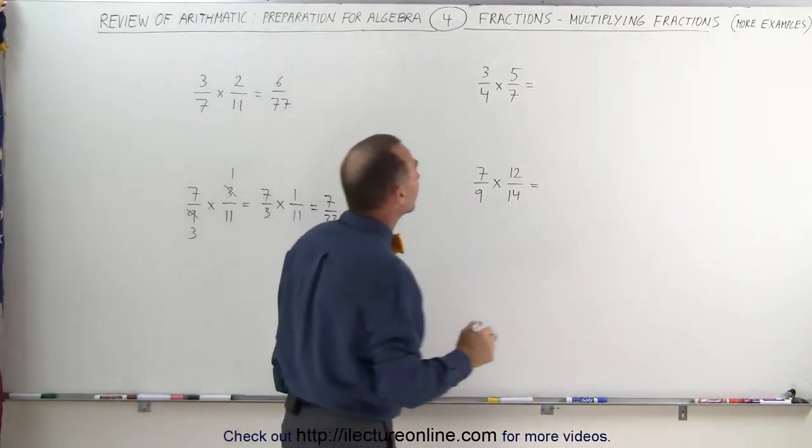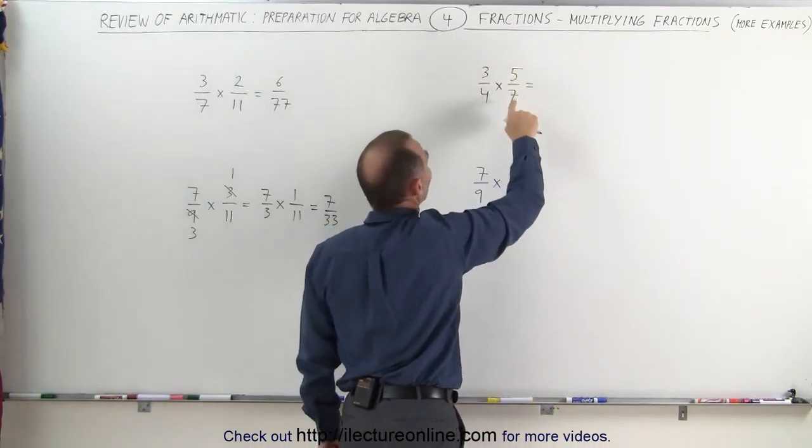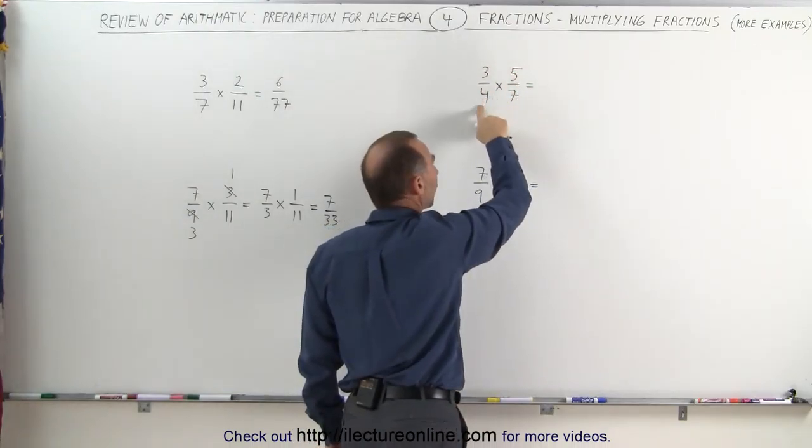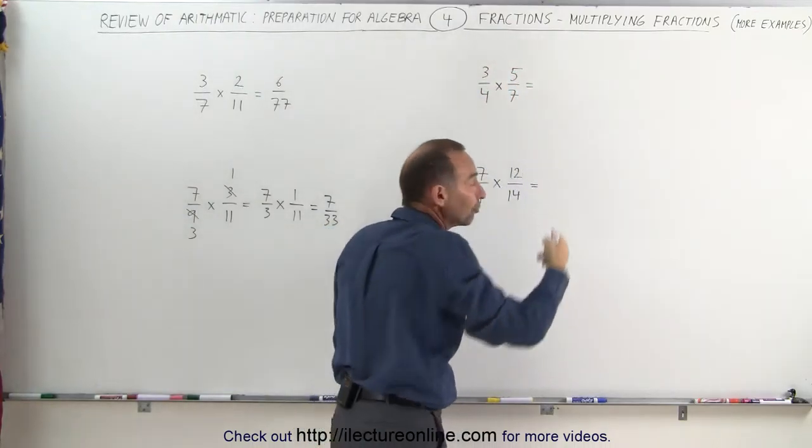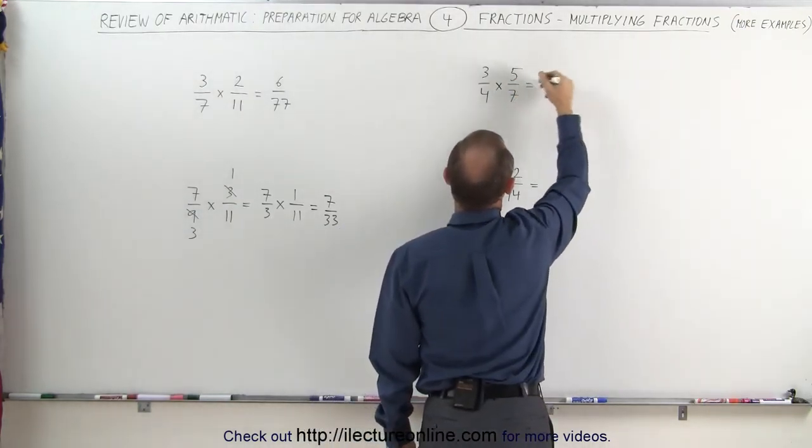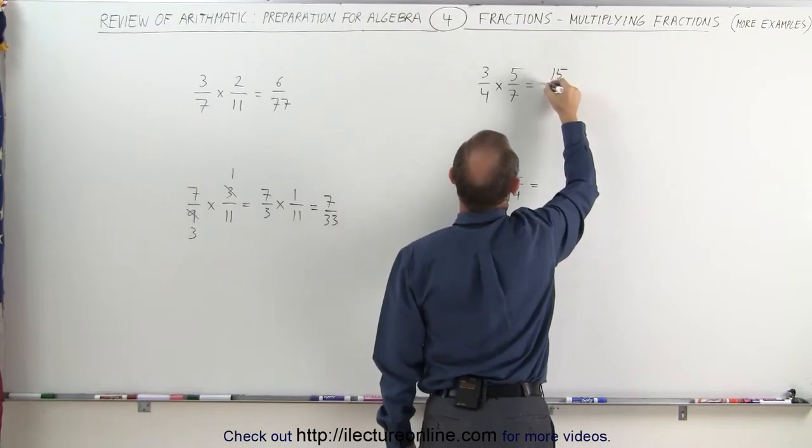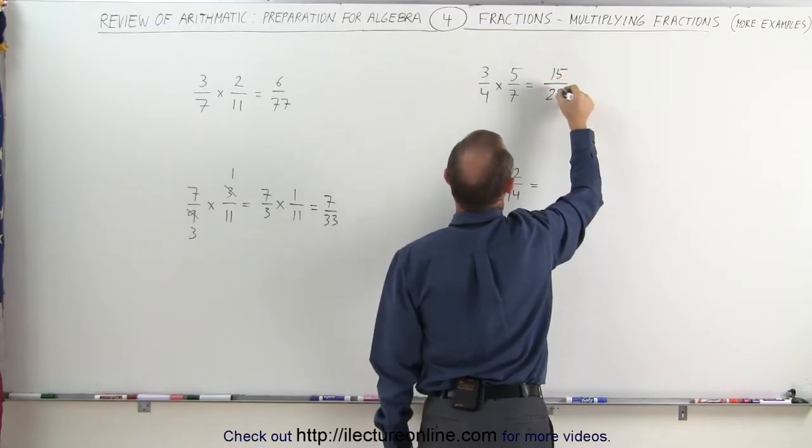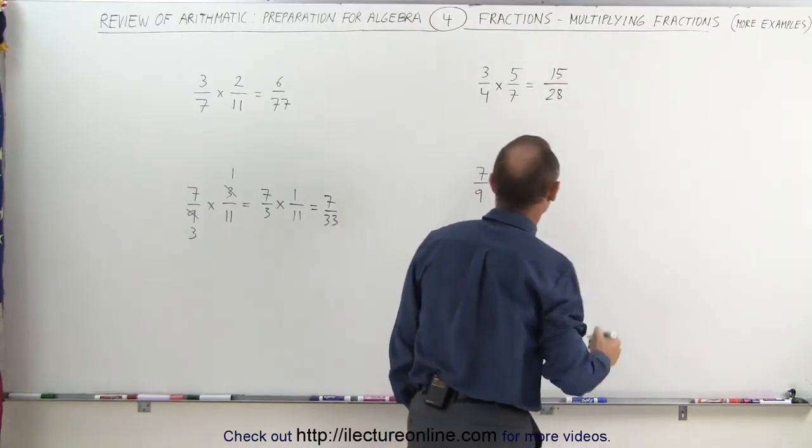On that example right here, notice that 3, 5, and 7 are all prime numbers. 4 is not, but I cannot reduce 4 with any other number there, which means that this becomes 3 times 5, which is 15, and 4 times 7, which is 28, and that's the final answer.